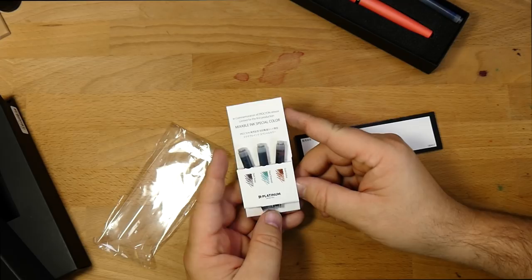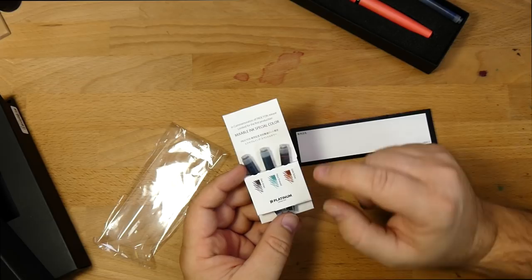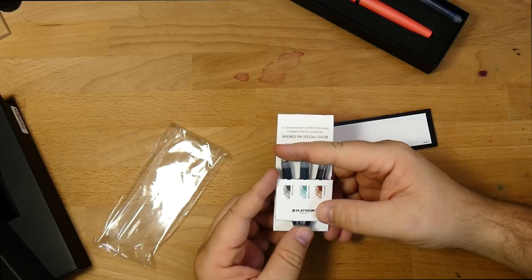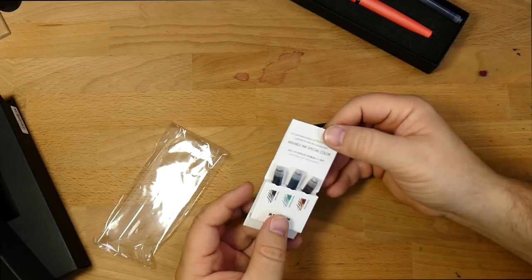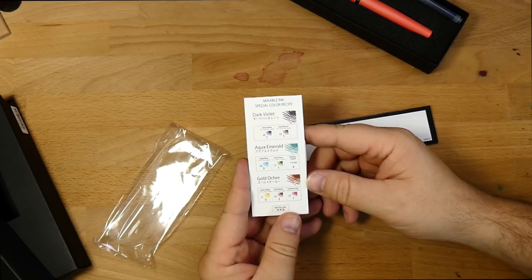But these are kind of special. So these are a set of three inks. We've got a dark violet, an aqua emerald, and gold ochre. And these are mixed inks. So Platinum's inks are already mixable. They call them Platinum Mix-Free Inks. And there are all kinds of fun little published guides and recipes and that sort of thing. These three are pre-mixed, and the recipes are on the back.